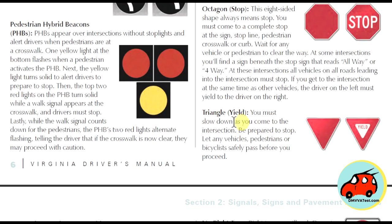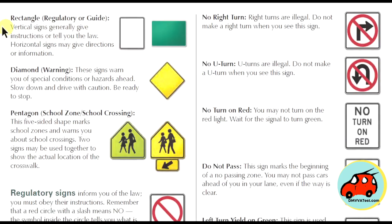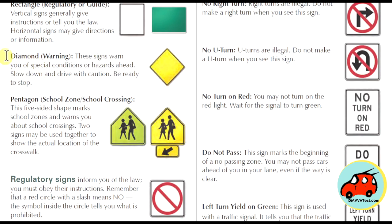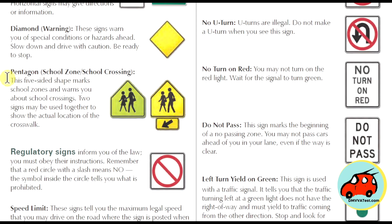Triangle signs mean you must slow down if you come to an intersection. Be prepared to stop if you see a yield sign shaped like a triangle — let vehicles, pedestrians, and bicyclists pass safely before you proceed. Vertical signs generally give instructions or tell you the law; horizontal signs give directions or information. A diamond shape means warning — slow down, drive with caution, and be ready to stop. A pentagon is a five-sided shape that marks school zones and warns you about school crossings; two signs may be used together to show the actual location of a crosswalk.